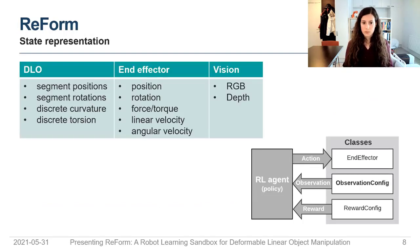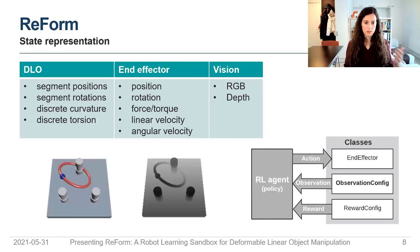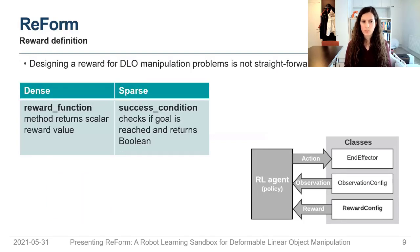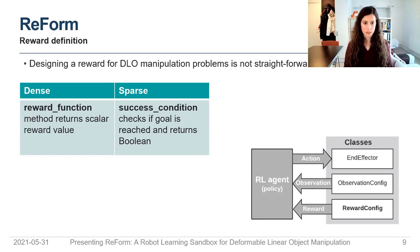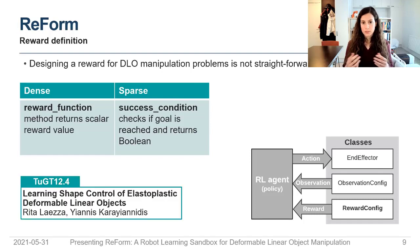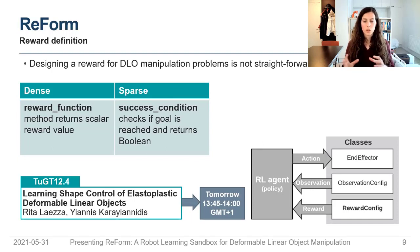There are several observation types. Notably, there is RGB and depth vision data. And then there's also the reward definition class, which we find useful especially when there is no clear way to define the goal in a way that works well with reinforcement learning. There will also be a presentation tomorrow at 1:45 where we go into how elastoplasticity makes the shape control problem harder.